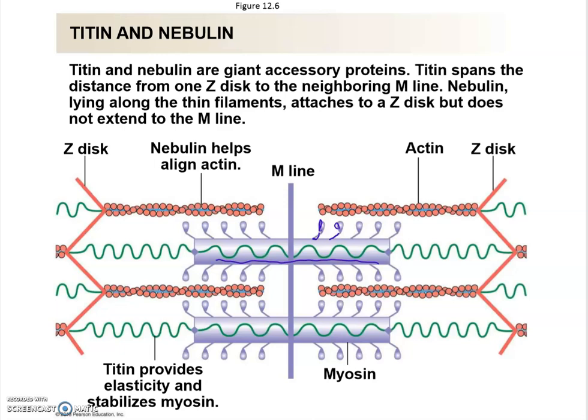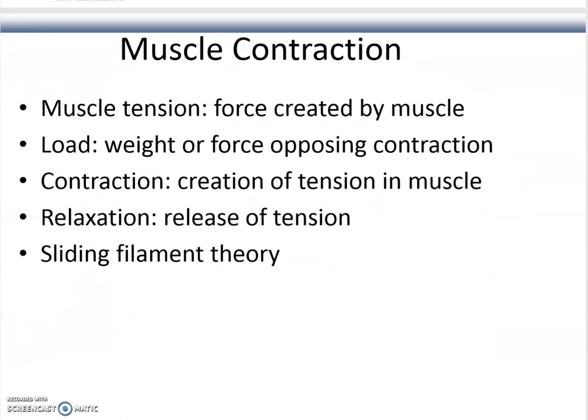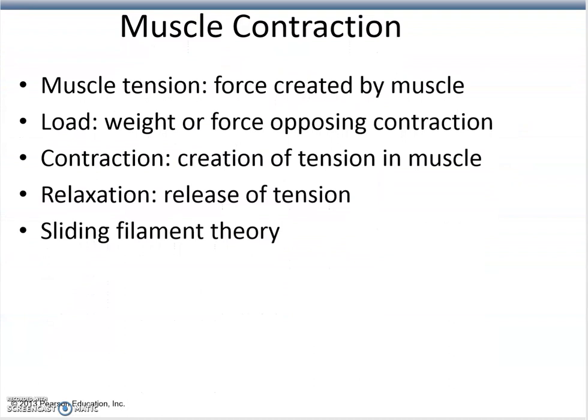Moving on to muscle contraction in general, a few key terms: muscle tension is the force created by a muscle; load is the weight or force opposing a contraction; contraction is the creation of tension in muscle; and relaxation is the release of that tension. The model we will discuss is called the sliding filament theory.